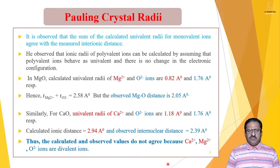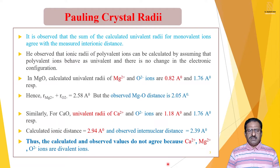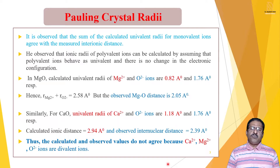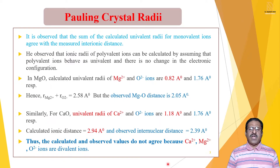Now we see Pauling's crystal radii. Pauling observed that the sum of calculated univalent radii for monovalent ions agrees with the measured interionic distance. He also observed that the ionic radius of polyvalent ions can be calculated by assuming that polyvalent ions behave as univalent ions, and that there is no change in the electronic configuration.